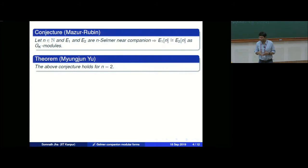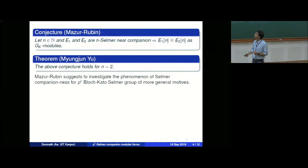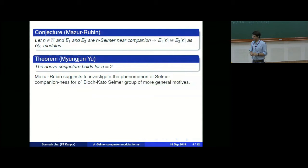Even for 2-power it is open. If you take 3-Selmer group and change the definition to use order-3 characters instead of quadratic characters, something like this can be proved, but for quadratic characters and odd Selmer groups it is still hard. In the paper, they suggest investigating this phenomenon for more general motives and for the p^r-Bloch-Kato Selmer group, and the content of this talk is the analog for motives coming from modular forms.